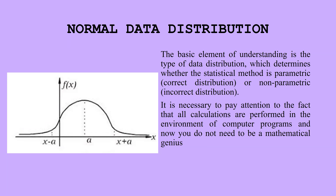The first element in scientific research is the type of data distribution. On this slide we can see normal data distribution. All results fit in the area between 25 and 75 percent. It's the normal, or typical, correct distribution of digits of scientific data in scientific research.